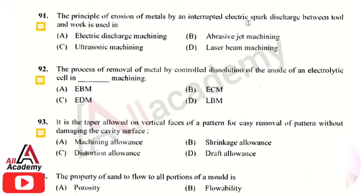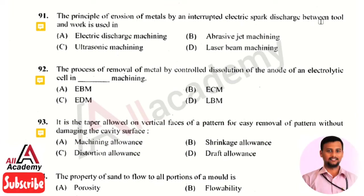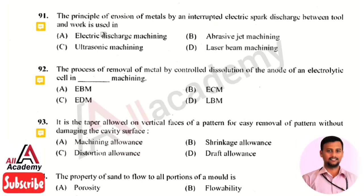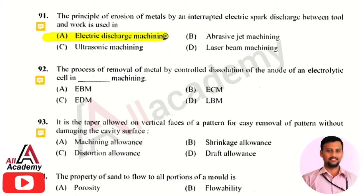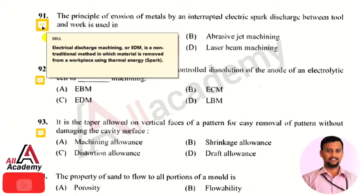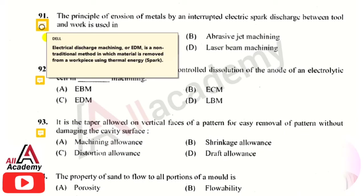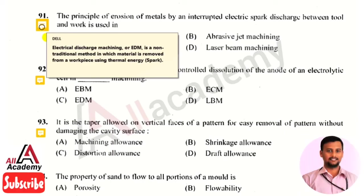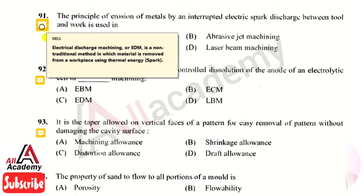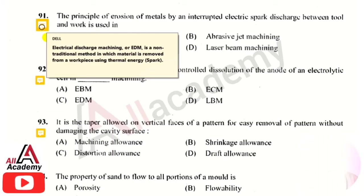The next question: the principle of erosion of metal by interrupted electric spark discharge between the tool and workpiece is used in — the right answer is option 1, that is Electric Discharge Machining (EDM). EDM is a non-traditional machining process in which material is removed from the workpiece with the help of thermal energy in the form of sparks.